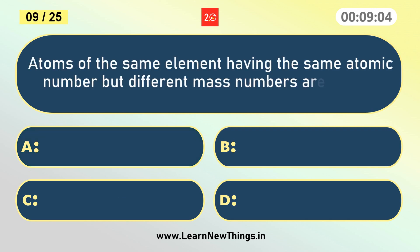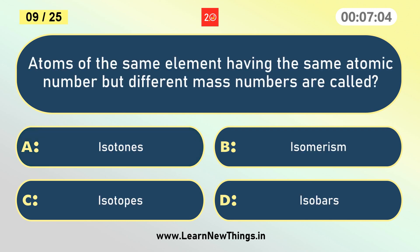Atoms of the same element having the same atomic number but different mass numbers are called? Isotopes.